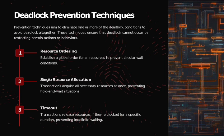We will now see about deadlock prevention techniques. Prevention techniques aim to eliminate one or more deadlock conditions to avoid deadlocks altogether. These techniques ensure that deadlock cannot occur by restricting certain actions or behaviors. The methods include: resource ordering, single resource allocation, and timeout.